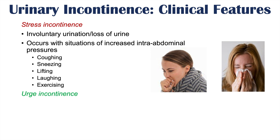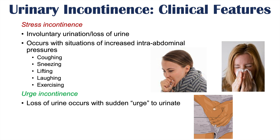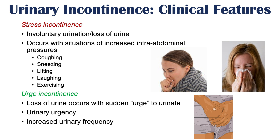Urge incontinence is a very different type. Loss of urine occurs when there is a sudden urge to urinate — the patient goes throughout their day and suddenly has a very strong urge and may lose some urine. There is urinary urgency and increased urinary frequency, so patients feel they must go very quickly and very often. There is also nocturia, meaning urination at night, where they are awakened with a sudden urge to urinate.